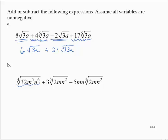Looking for perfect fourth factors: 32 is 16 times 2, so that's 2 to the fourth times 2, times m to the fourth times m, times n to the fourth times n squared. So I'd have 2mn times the fourth root of 2mn squared pulled out.